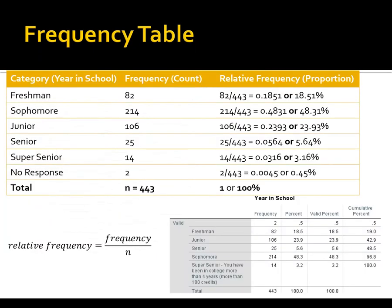Let's take a look at the frequency table. I did the frequency table two ways — I'll focus on the upper part first. We have the columns: category (year in school), frequency or count, and relative frequency. I listed them in order from least amount of school completed to most, with non-responses last. I counted the number of individuals who classified themselves as each category: there were 82 freshmen, 214 sophomores, and so on, for a total of 443 students surveyed.